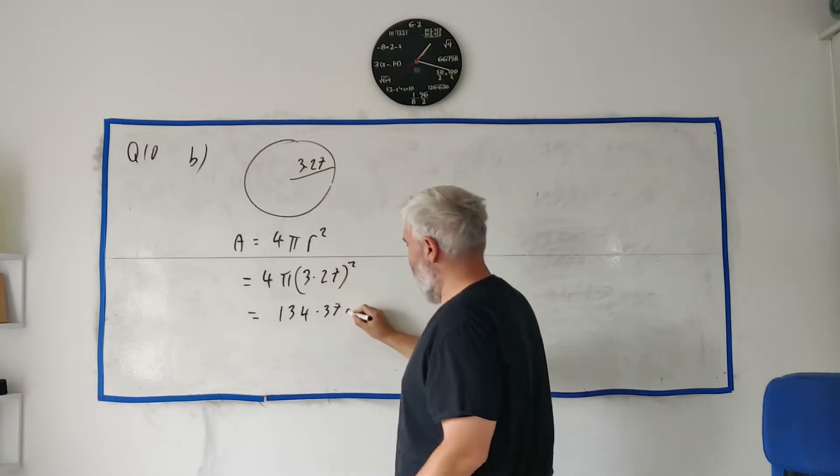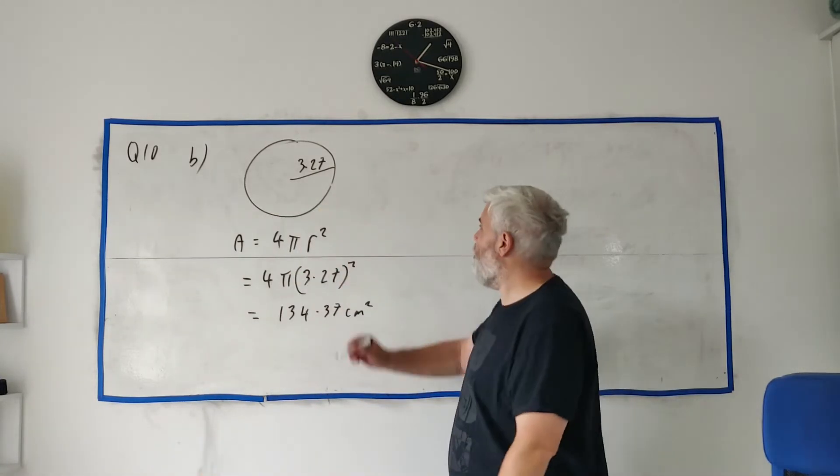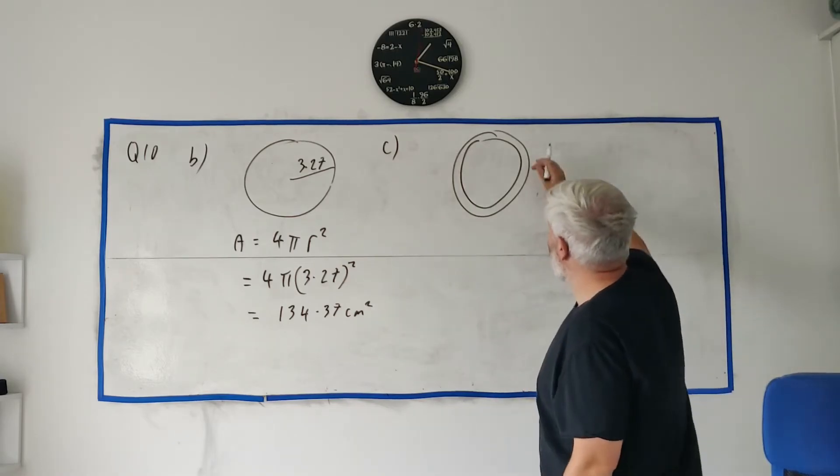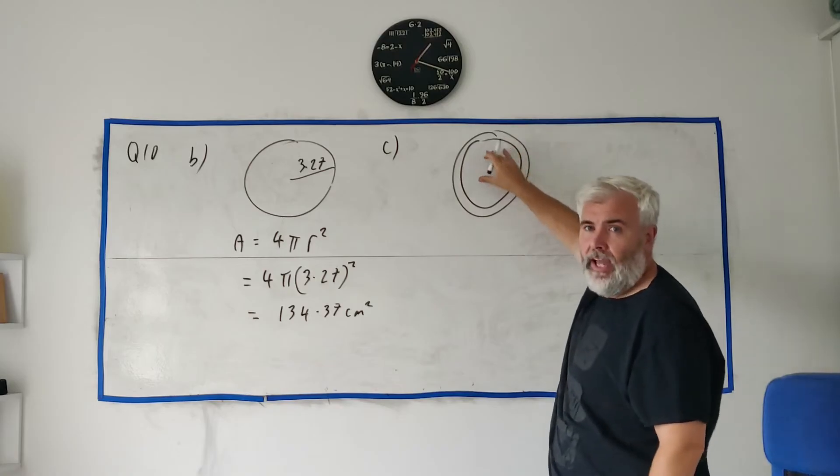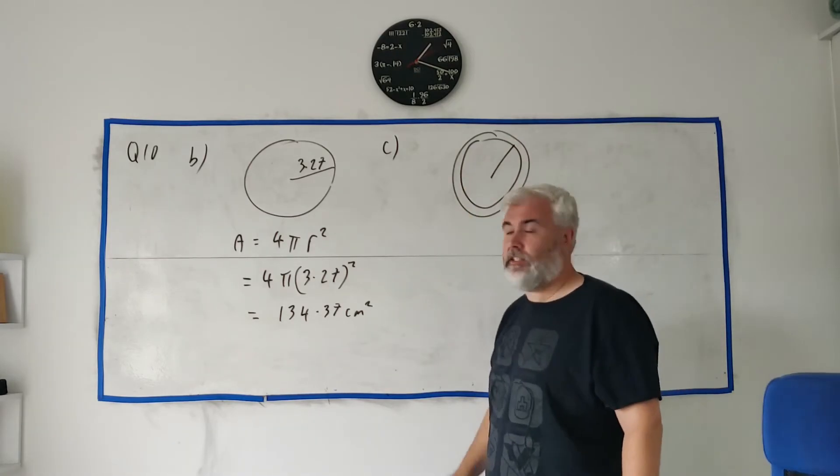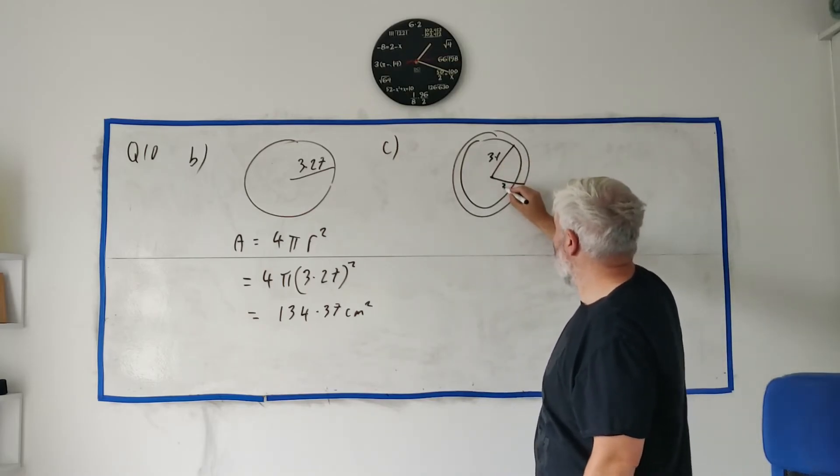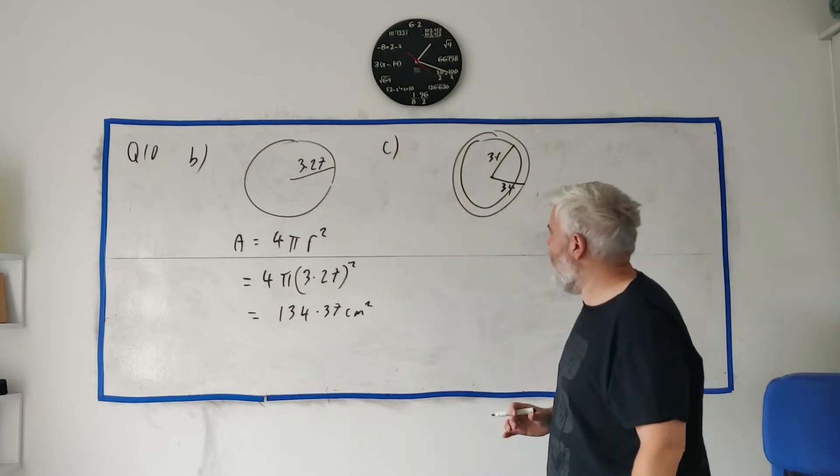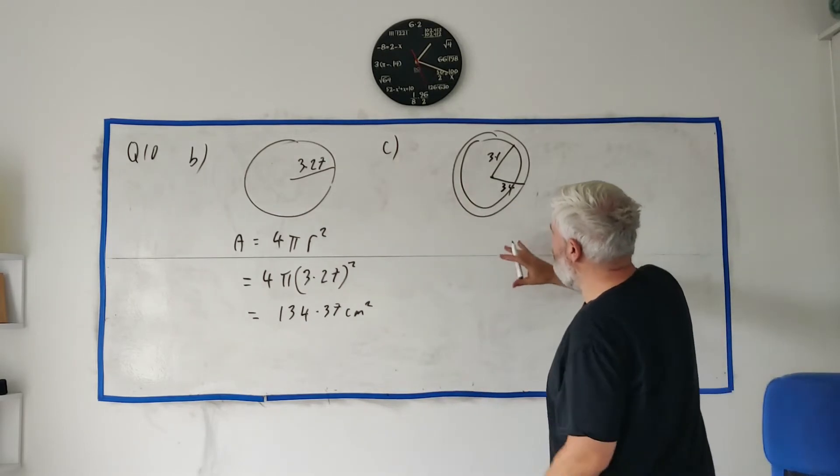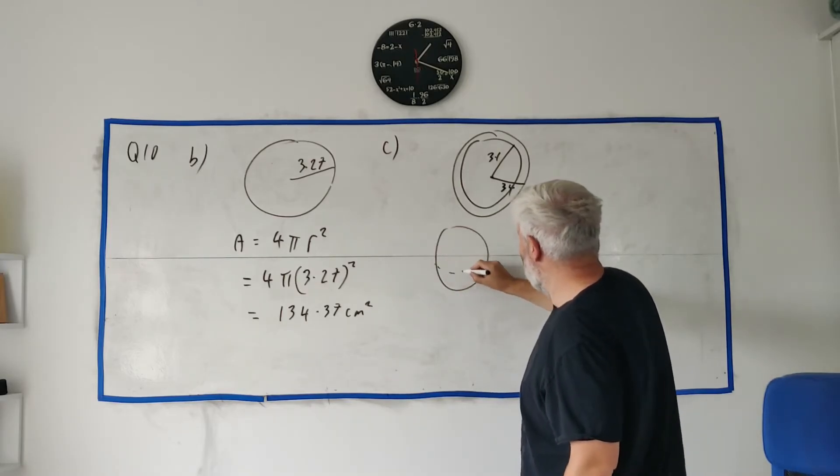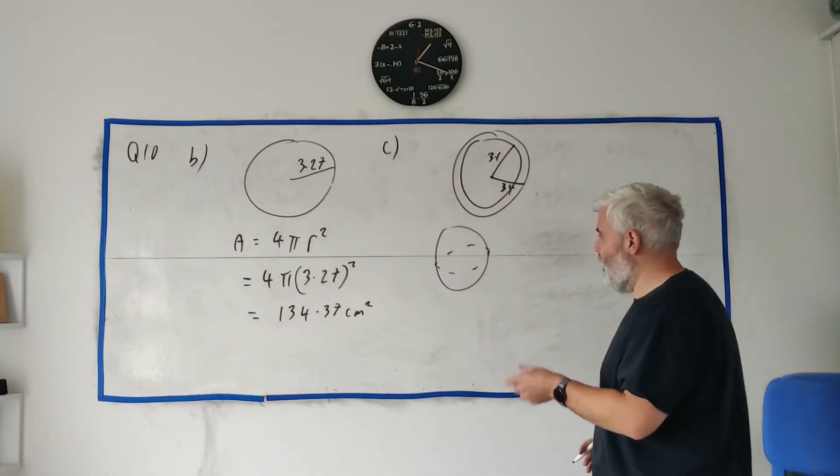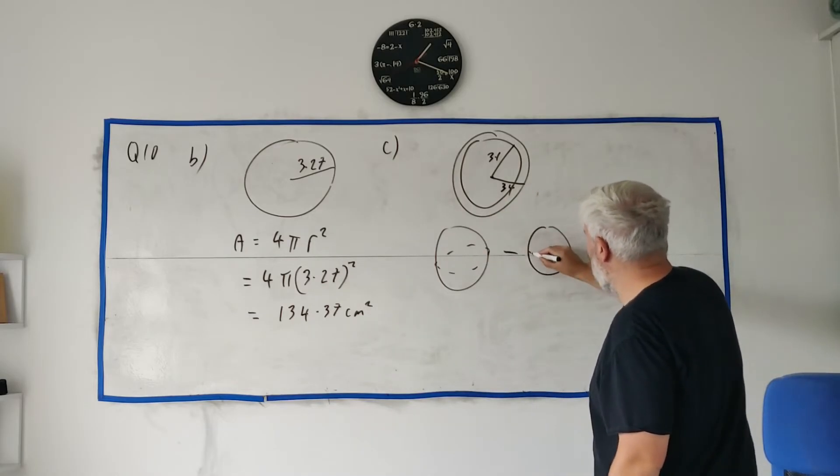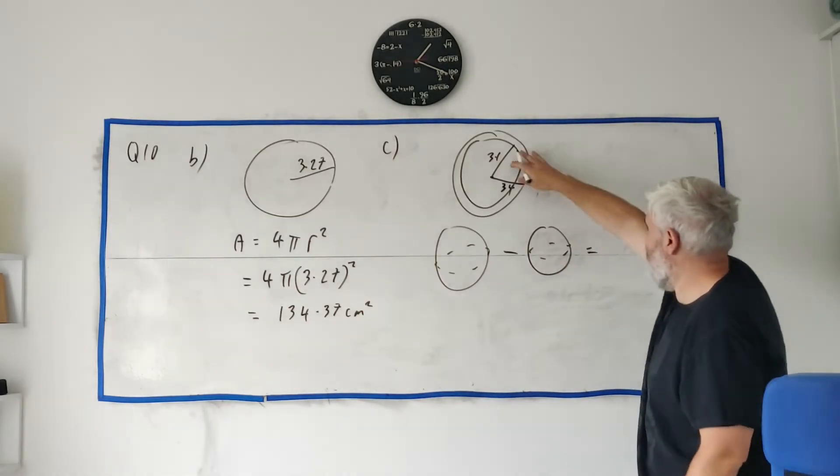We have everything we need. A is equal to 4π, use your calculator for π, and r² is 3.27 squared. Put that on a calculator and we get 134.37 centimeters squared. For part C they give us a tennis ball again but they point out that it's a bit of rubber and then air, and they tell us the radius of the inner part of this tennis ball is 3.1 and the outer part is 3.4, and they want us to find out how much rubber there is, what's the volume of this rubber.